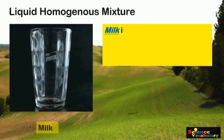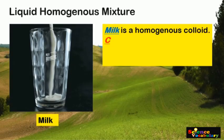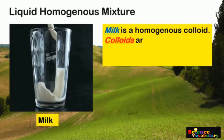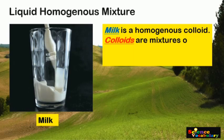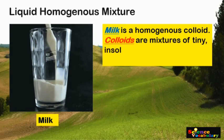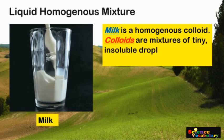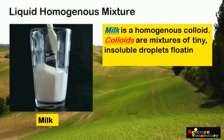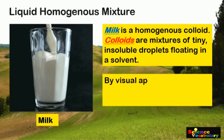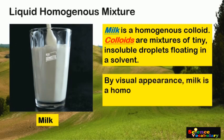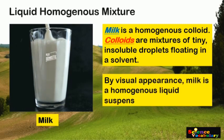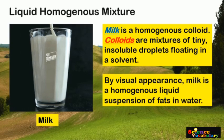Milk is also a liquid homogeneous mixture, but classified as a colloid. Colloids are mixtures of tiny, insoluble droplets floating in a solvent. By visual appearance, milk is a homogeneous liquid suspension of fat in water.